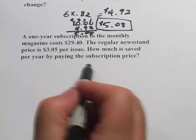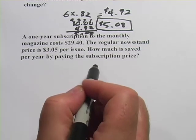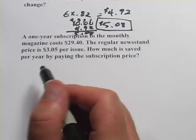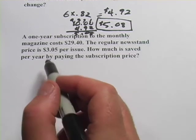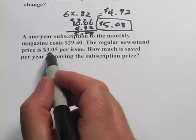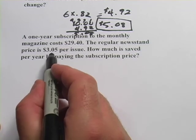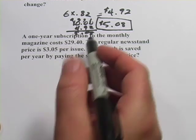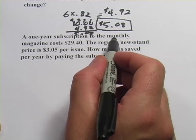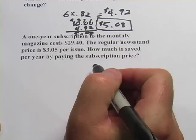Well, if we want to find out how much you're saving by paying the subscription, we need to find out how much it would cost for a whole year buying it at the newsstand. It's $3.05 per issue at the newsstand, and it's a monthly magazine. So there are 12 months in a year.